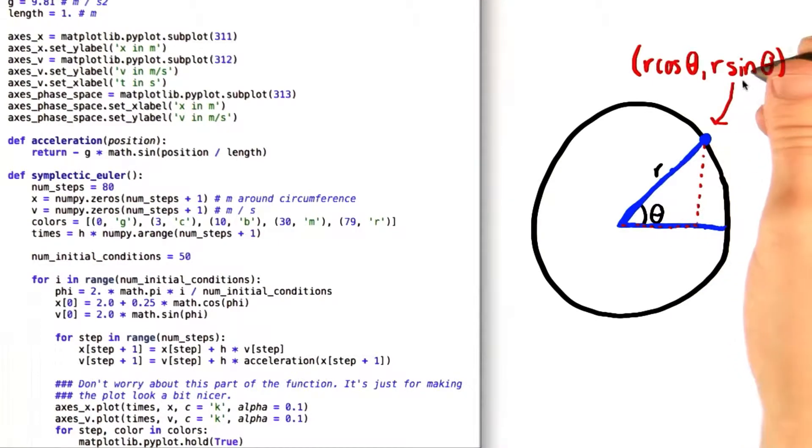That's for the horizontal component. And for the vertical component, we get the radius times the sine of the angle.